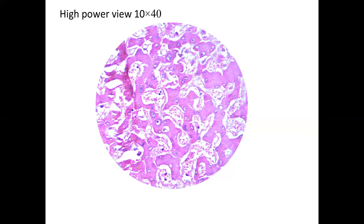Moving to a high power view of the same liver slide (10x40), you can now very clearly see the nuclei. Inside the nucleus, you can see chromatin as well as the nucleolus. The pink area surrounding the nucleus is the cytoplasm, so the cell margin would be somewhat like that — a central nucleus with cytoplasm surrounding it and a visible nucleolus. The sinusoids are also clearly seen here, and you can see individual red blood cells.